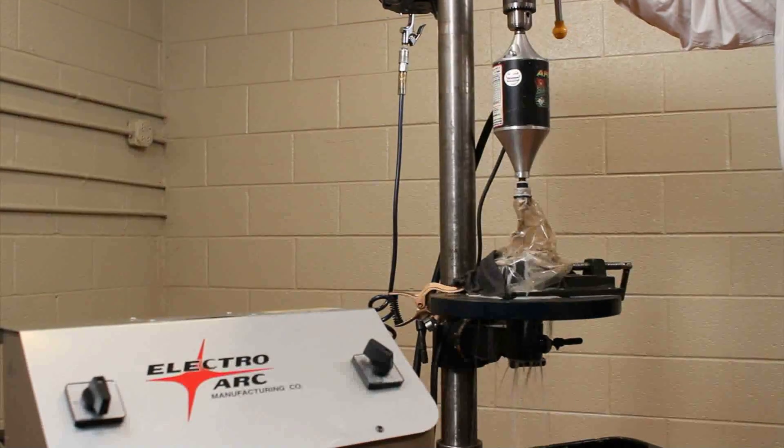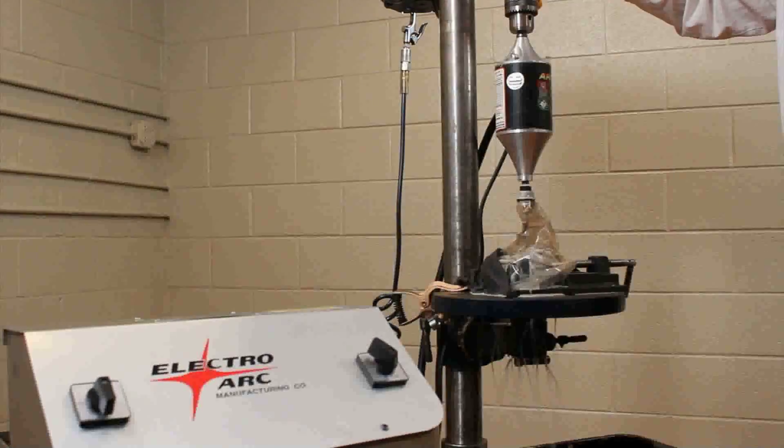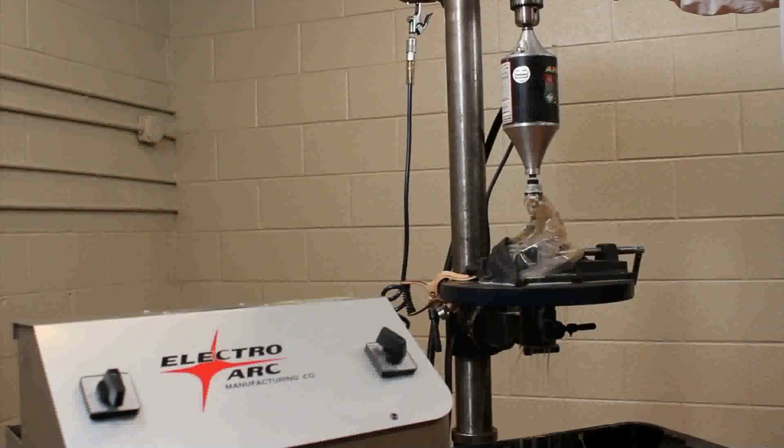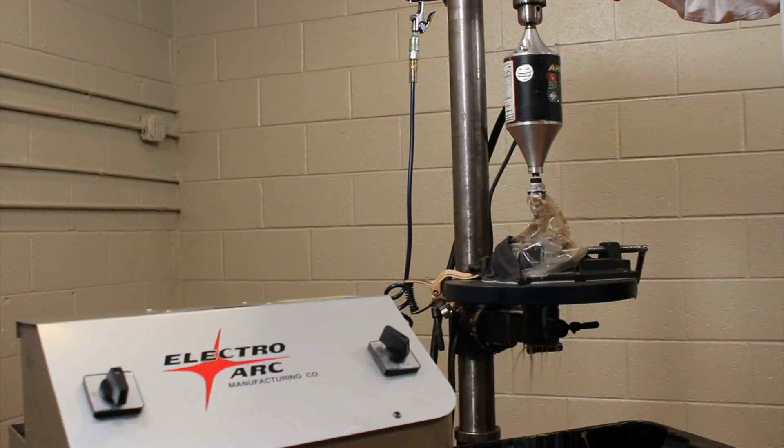So you're always going to just undersize the electrode compared to the diameter of what you're trying to take out. So for example, a tap, you're going to use about half the diameter of the tap size.